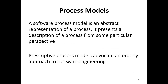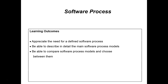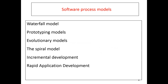A process model is an abstract representation of a process. It represents a description of a process from some particular perspective. These are the software process models: waterfall model, prototyping model, evolutionary model, spiral model, incremental model, rapid application development, and finally we are going to discuss about the agile model.